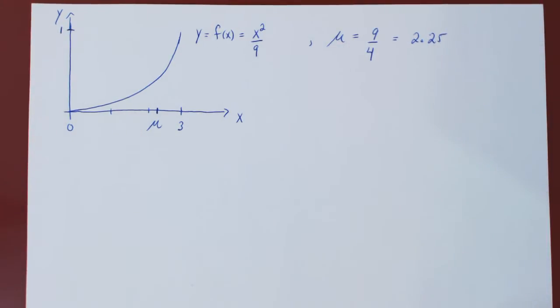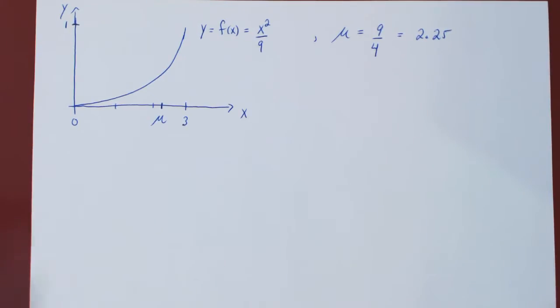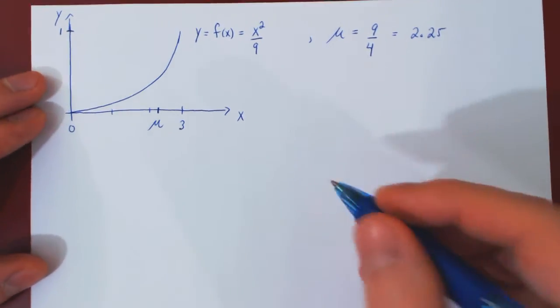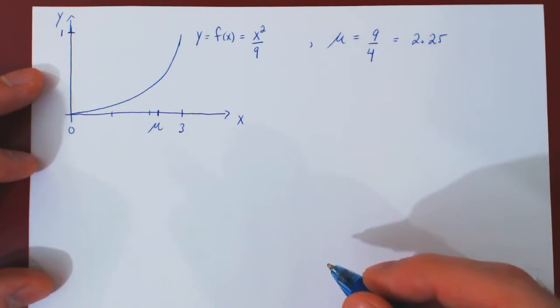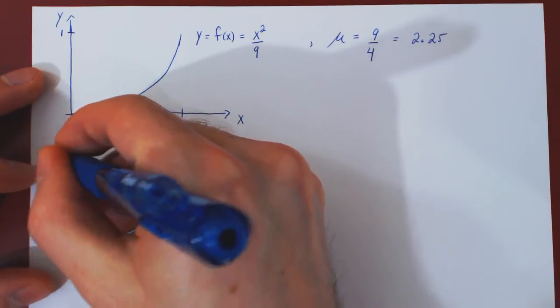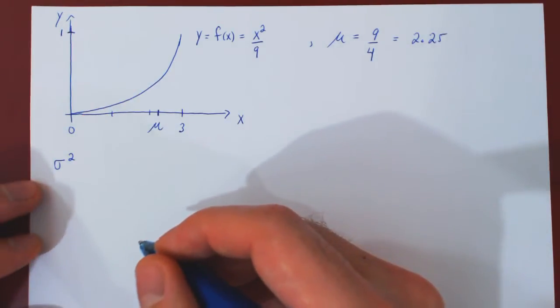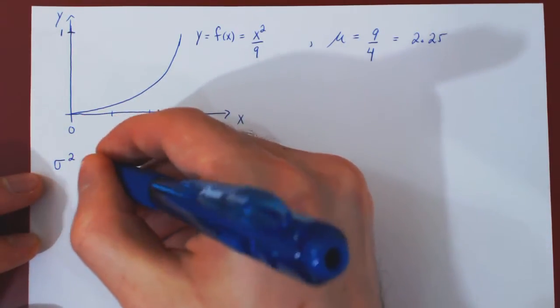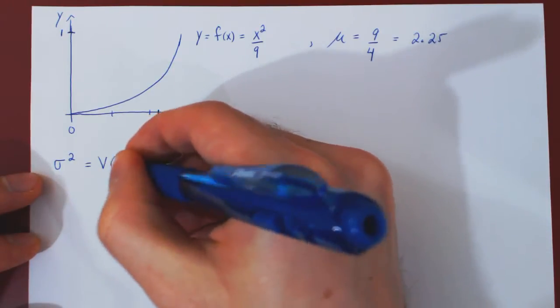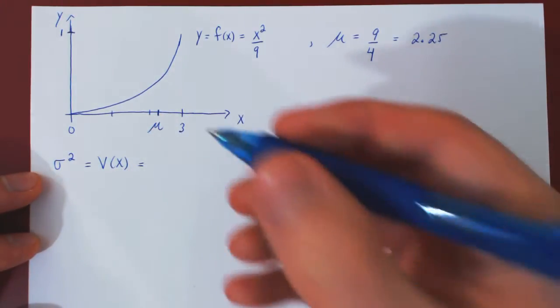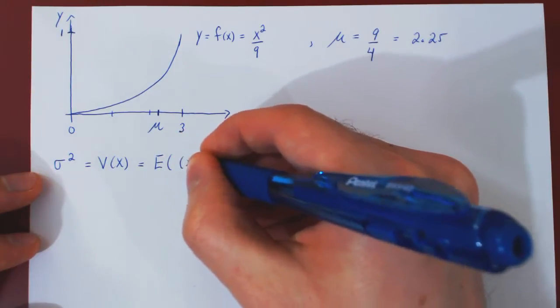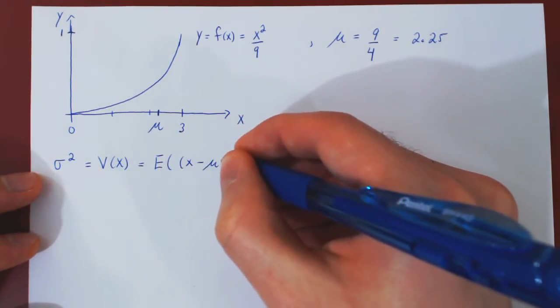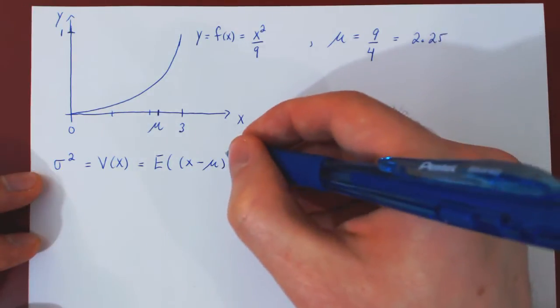Well, in this video, you will find the variance and standard deviation of x. Once we have the variance, the standard deviation is easily calculated. So, we denote the variance of x by sigma squared, also by V of x. And the variance is the expected value of the difference between the value and its average value mu, but squared, as we want a positive measure.